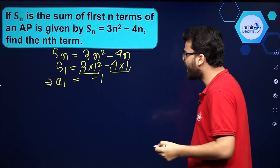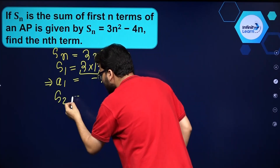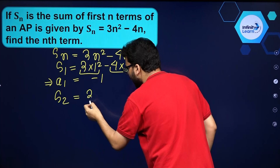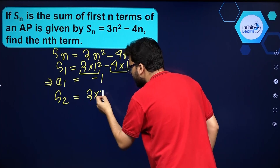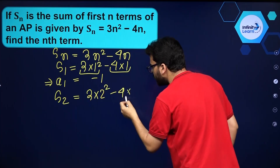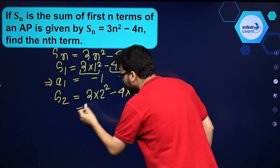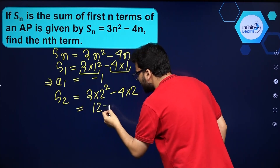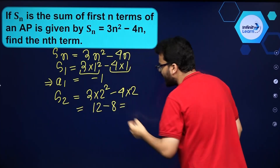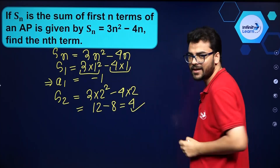In the same manner, can I find S2? So S2 — I have to put 2 over here. It is 3 into 2 squared minus 4 into 2. So that is 12 minus 8, which is equal to 4.